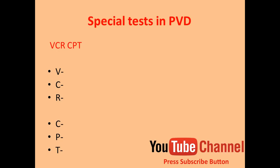Let's see the first one: special tests in PVD. The mnemonic I have prepared is VCR CPT — VCR like the cassette from the previous era, and CPT for cardiopulmonary physiotherapy. Here V stands for venous refilling time, C for claudication test, R for Ruba of dependency test, C for cuff test, P for percussion test, and T for Trendelenburg test.